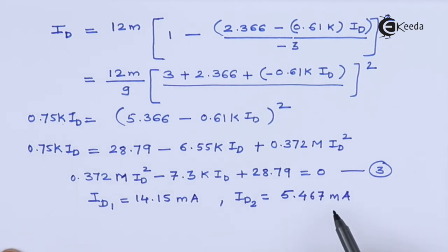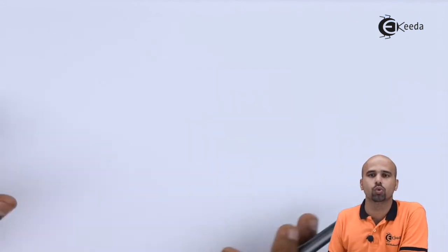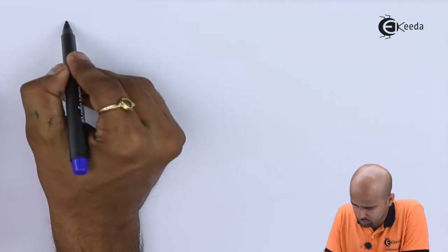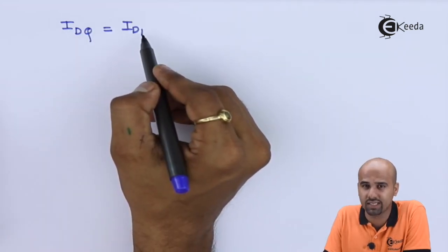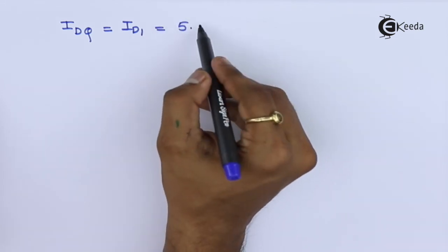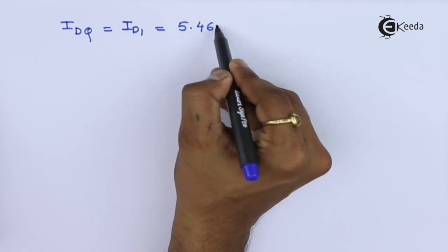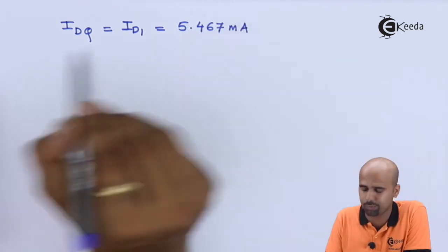Now, you start thinking that whether we have to select ID1 or ID2. Which value is less than IDSS? That is 12 milli ampere. Obviously, this one. So we will select this one. We will reject this one as ID should be less than IDSS. Right? So what do we want? We want IDQ and that IDQ itself is an ID, that is ID1 which is equal to 5.467 milli ampere.